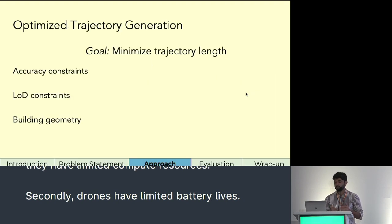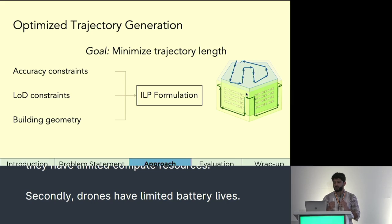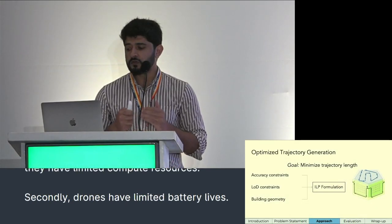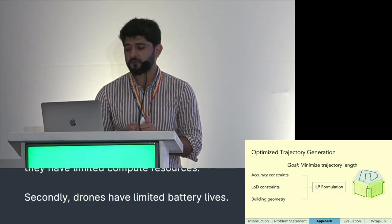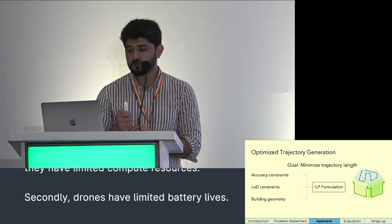From this, we have some flight constraints to ensure high accuracy. Similarly, we have other constraints that ensure we can capture the object at a given level of detail. In addition, we want to minimize trajectory length to save the drone's battery life. To jointly optimize for all of these, we use an integer linear programming formulation and feed these constraints to it. The result is an optimized trajectory that ensures high positioning accuracy and low energy consumption.